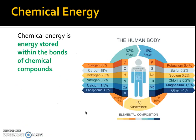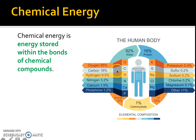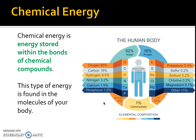Chemical energy is the energy that's stored within the bonds of chemical compounds. We have a significant amount of chemicals within our body and they all have different jobs. For example: oxygen, carbon, hydrogen, nitrogen, phosphates, magnesium, sodium — all of these make up the human body. This type of energy is found in the molecules of your body, so we're talking at a minute level.